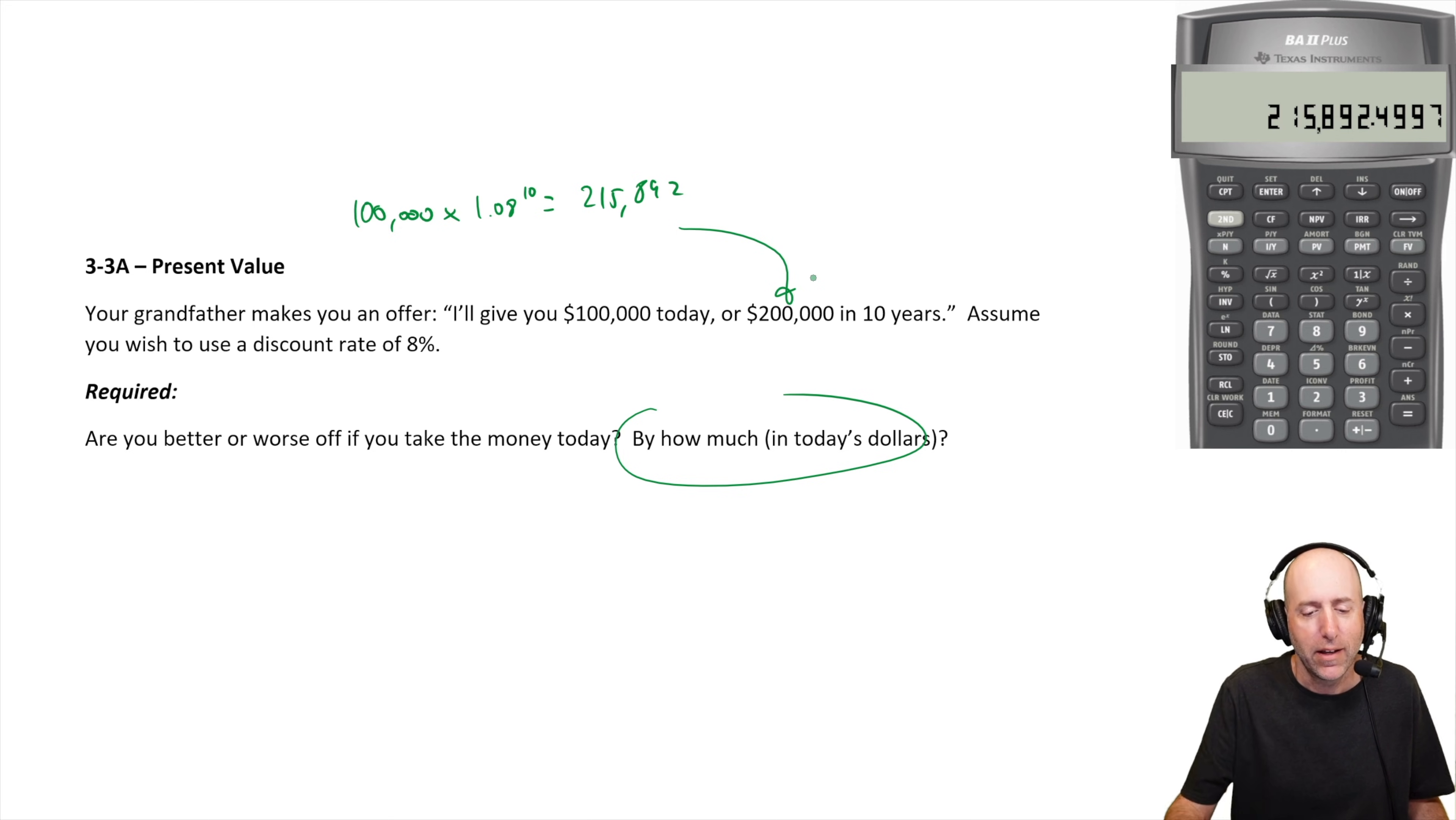But I'm $15,000 better off in 10 years. How much better off am I in today's dollars? Well, the way we would get at that is to take this $200,000 and discount it back to today. So how would you go about doing that?